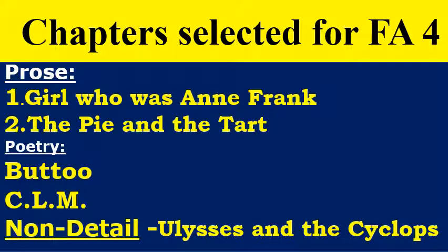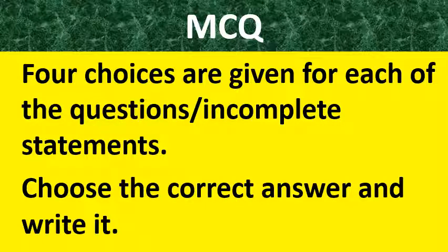Students, in this FA4 First Language English, we have considered two lessons in prose and two poems in the poetry section, and one lesson in non-detail. In prose: 'The Girl Who Was Anne Frank' and 'The Pie and the Tart.' In poetry: Book Two and CLM. In non-detail: Ulysses and Cyclopes. In your school there may be one or two poems more — no problem, you can consider all these lessons. These are the lessons, poems, and supplementary content considered for FA4, including grammar.